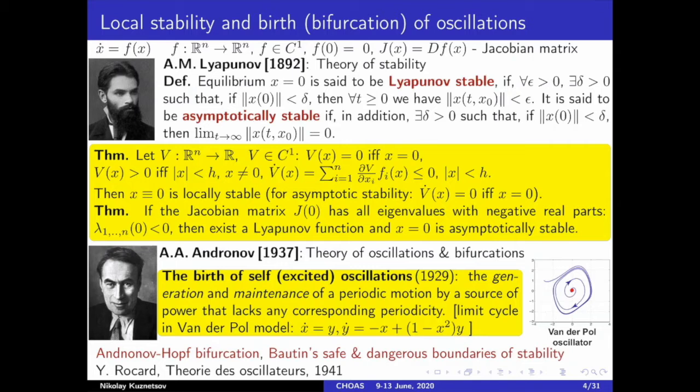Almost 40 years later, Alexander Andronov combined Lyapunov's ideas of stability and ideas of limit cycles introduced by Henri Poincaré, and developed the mathematical theory of oscillations and bifurcations. It is interesting that a few years later, similar ideas were published by Yves Raccard, the father of the French atomic bomb.